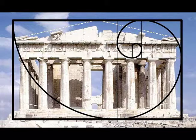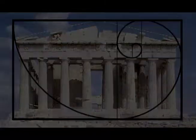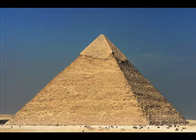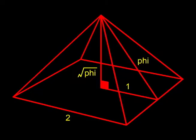The Parthenon was constructed long before Euclid defined the Golden Ratio. The Great Pyramid of Giza, constructed as a tomb for Khufu, contains the relationships of phi in its design. As demonstrated in this image, the right triangle within the pyramid has a ratio of 1 to the square root of phi to phi. This right triangle is a bisection of the Golden Triangle, which is actually an isosceles triangle in which the smaller side is in Golden Ratio with its adjacent side.